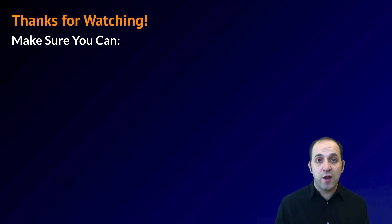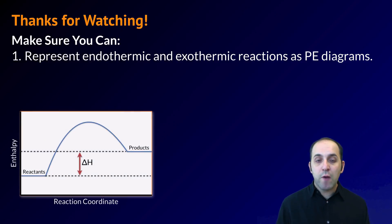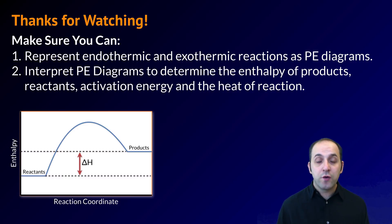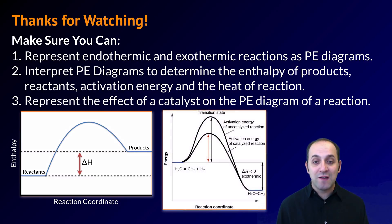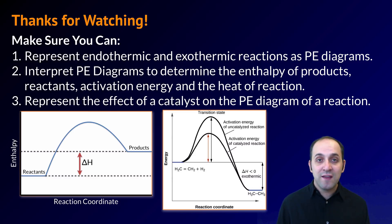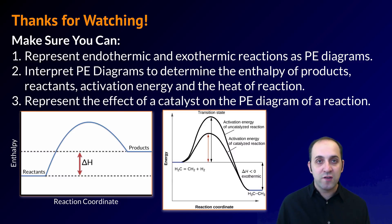Thanks for watching our discussion of potential energy diagrams. Make sure that you can represent endothermic and exothermic reactions as potential energy diagrams, and that you can interpret potential energy diagrams to determine the enthalpy of products, the enthalpy of reactants, the activation energy, and the heat of a reaction. Finally, make sure that you can represent the effect of a catalyst on the potential energy diagram of a reaction. If you have any questions, leave them below the video. Thanks again for watching — have a great day.